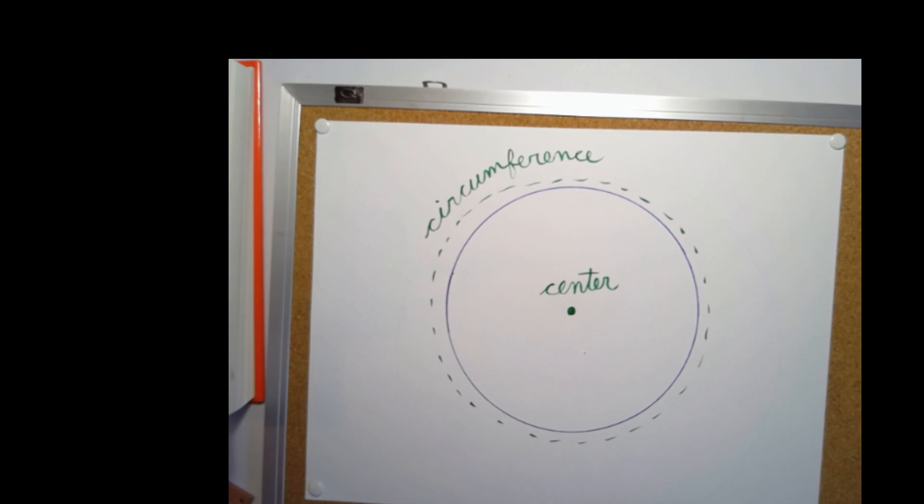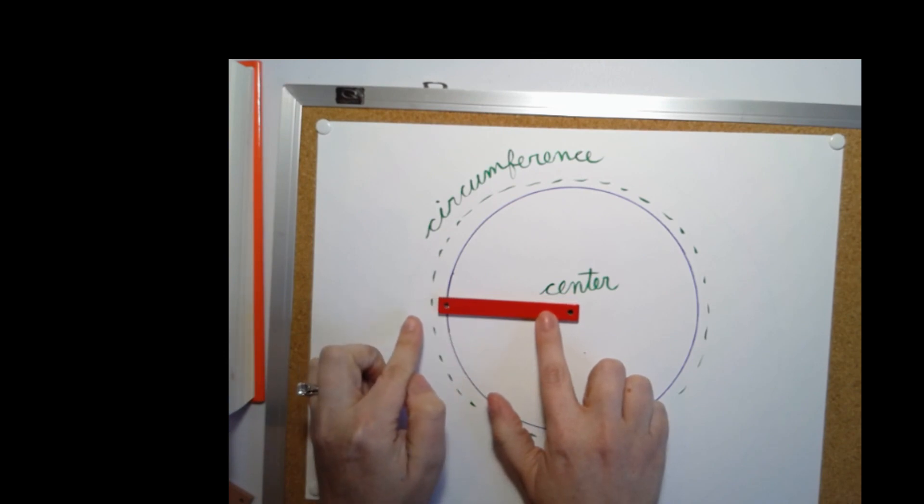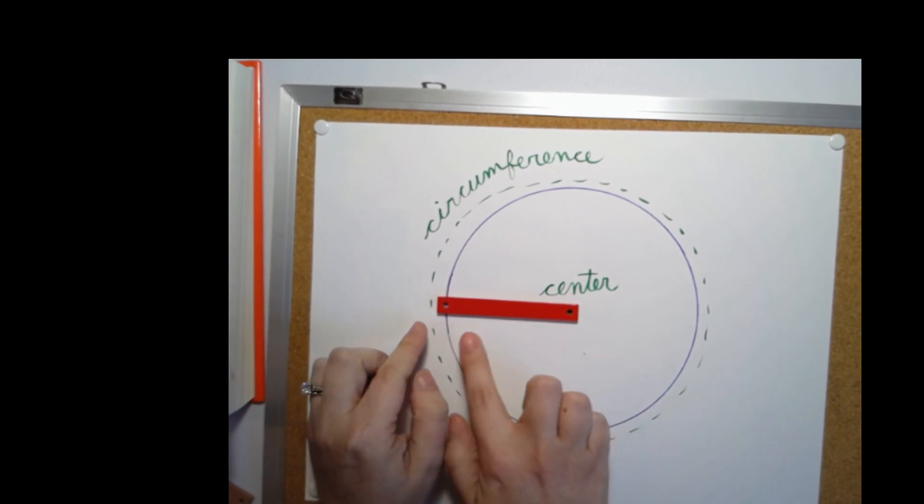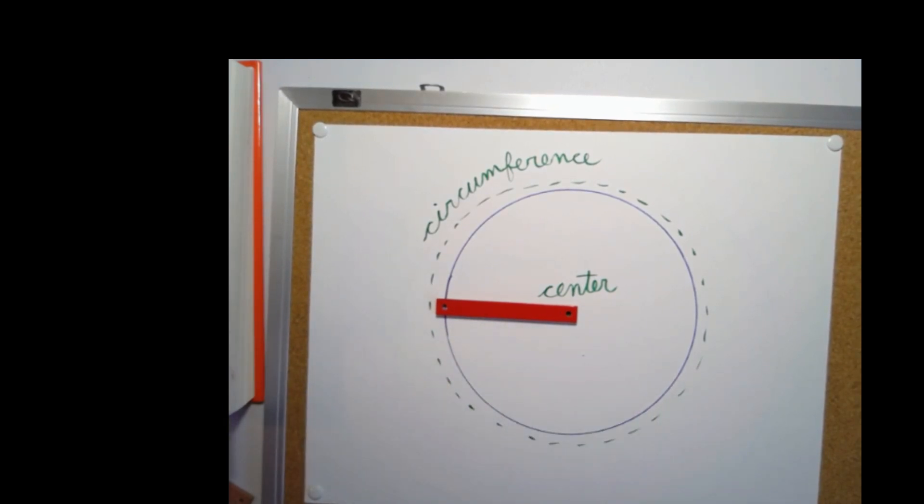So if I take a line and I draw it from the center to the circumference, this is called a radius. So from the center of the circle to the perimeter is called the radius.